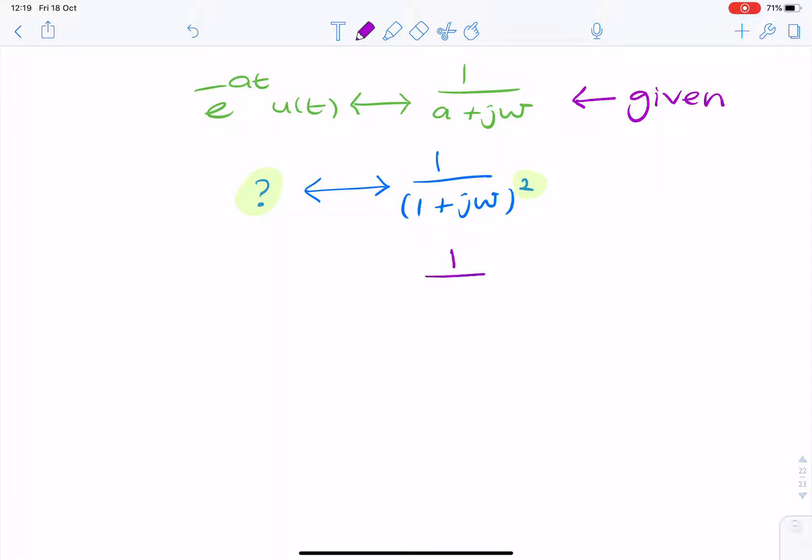So, it's something like 1 plus j omega multiplied by 1 over 1 plus j omega. So, the question now is, what is the inverse Fourier transform of that?